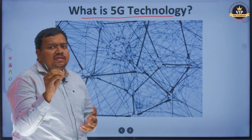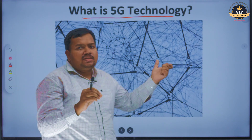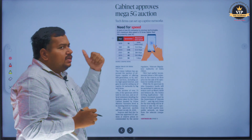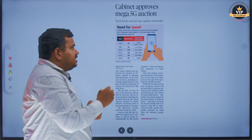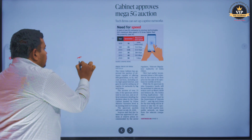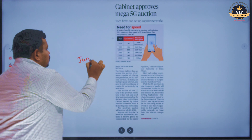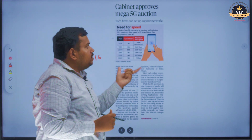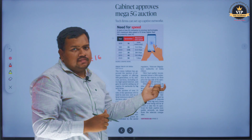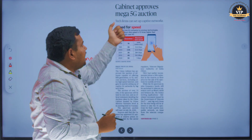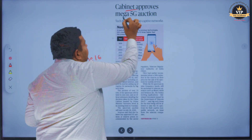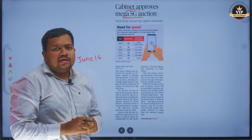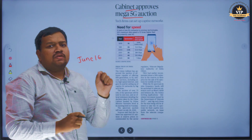First, why are we talking about this context? If you see June 16th in the Hindu newspaper on the first page, there is an article. What is the article? 'Cabinet approves mega 5G auction.' So the Indian cabinet approved a 5G spectrum auction.